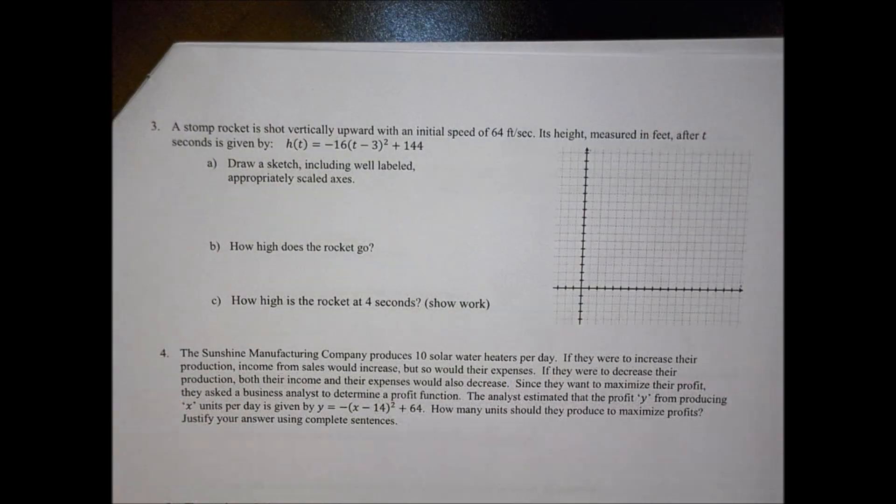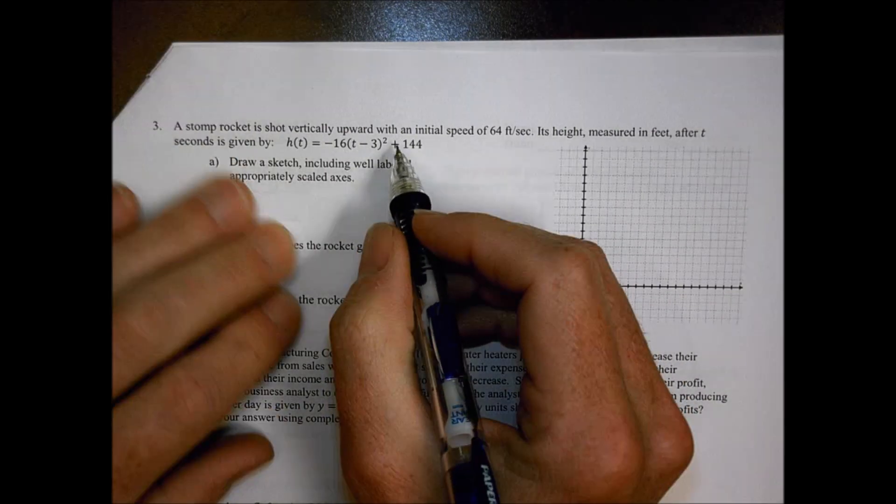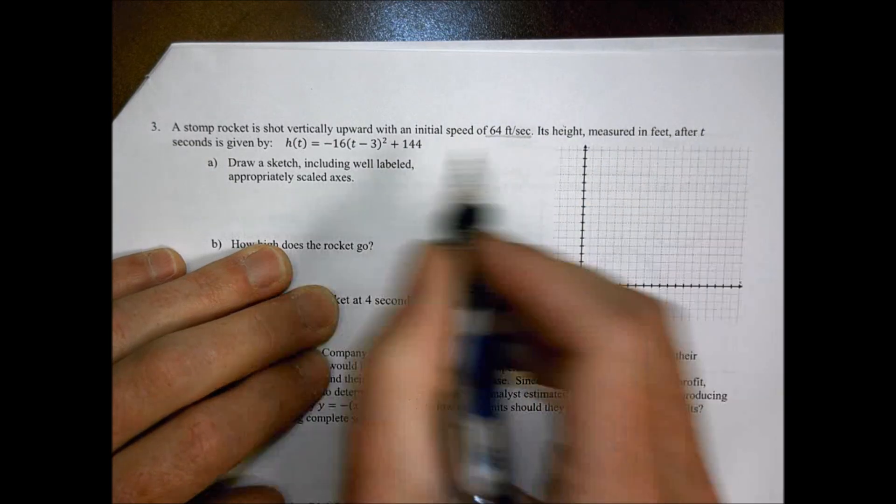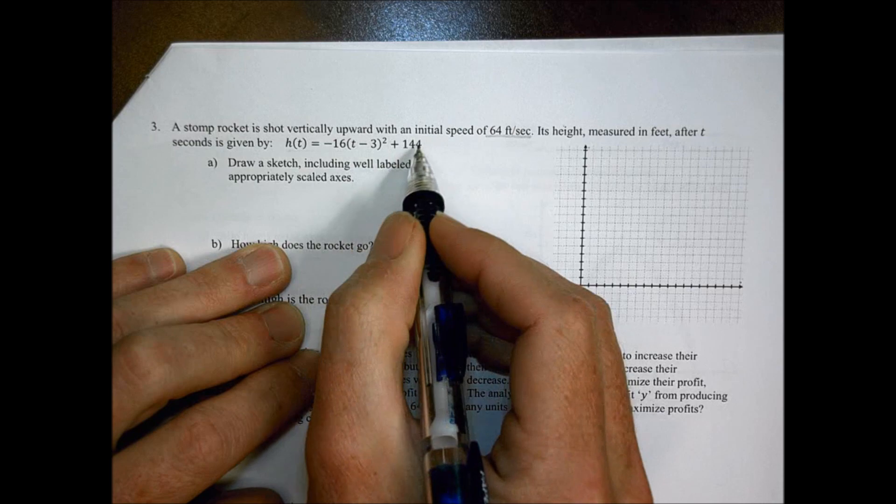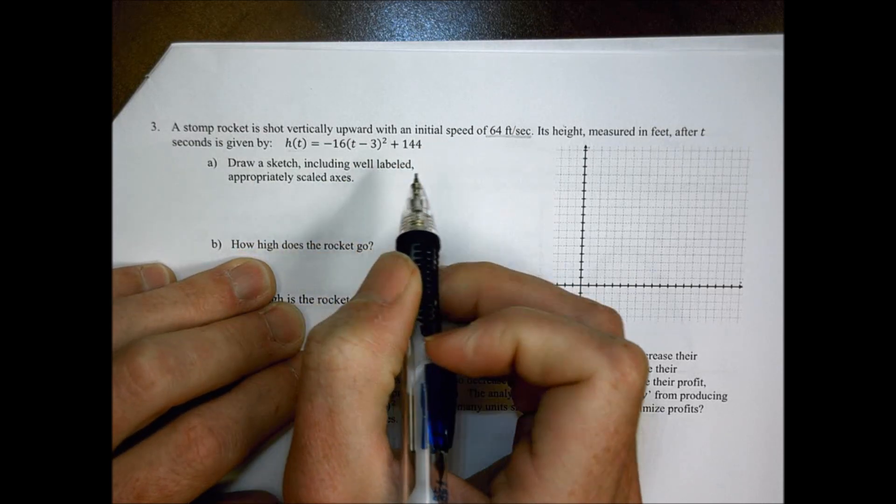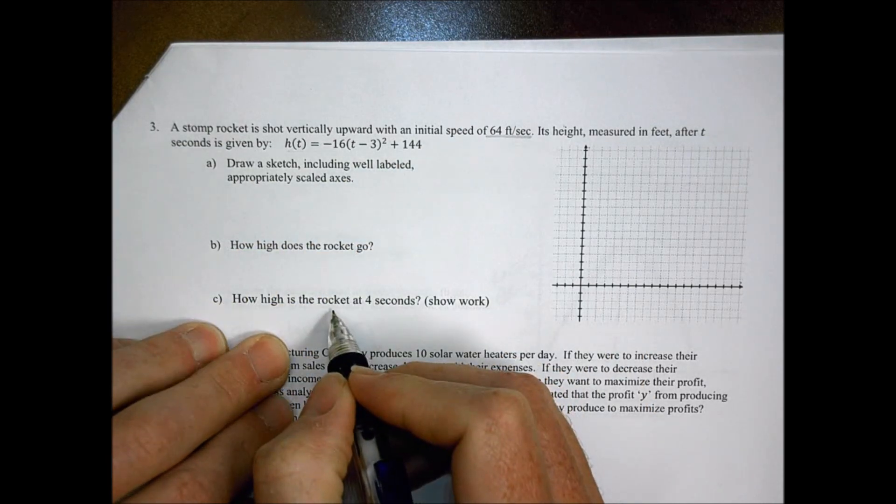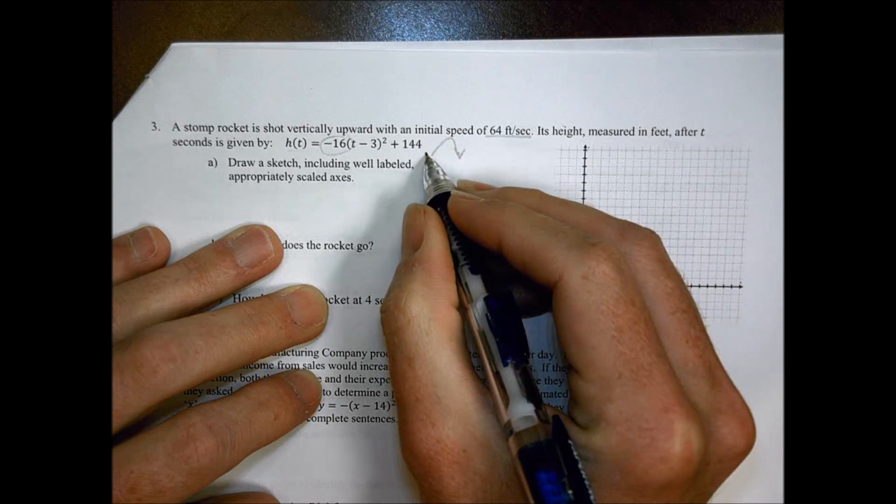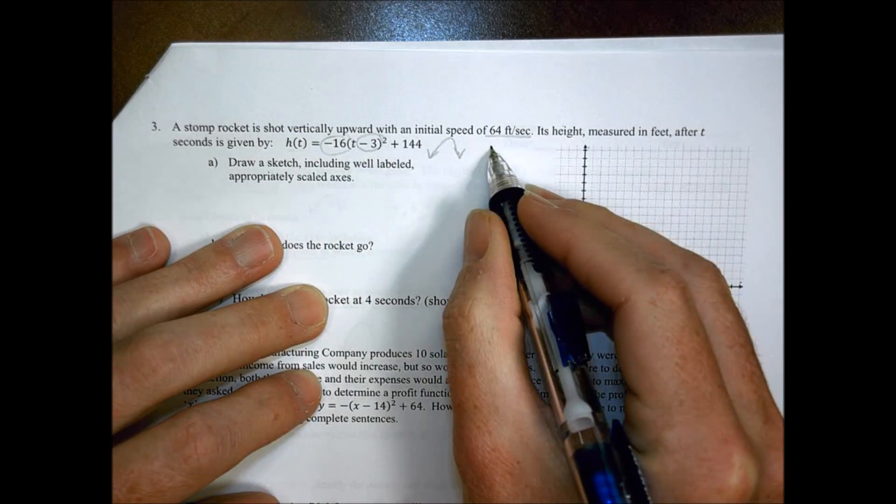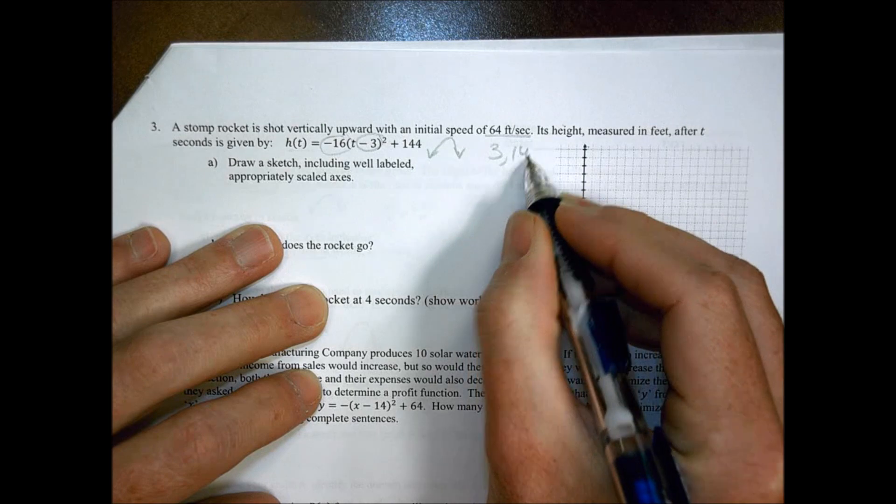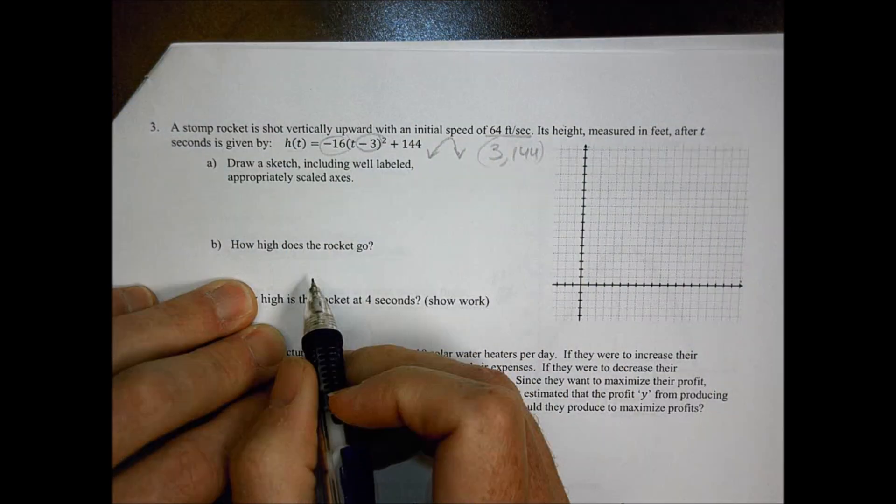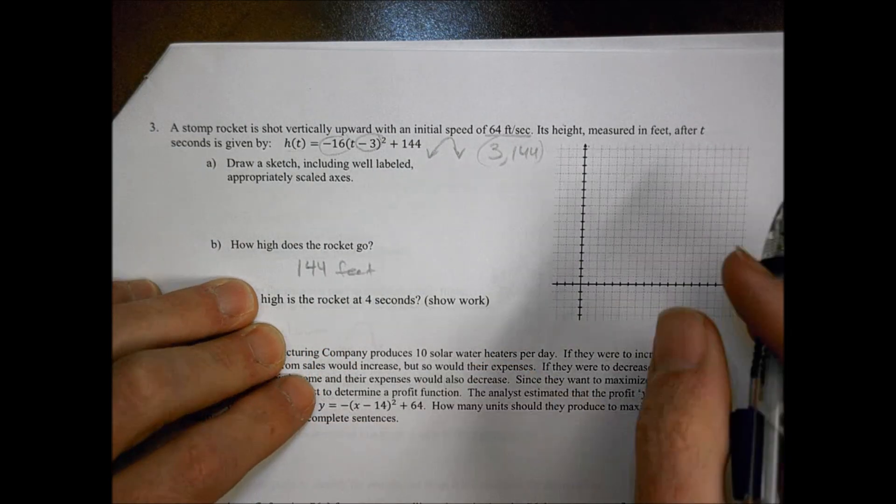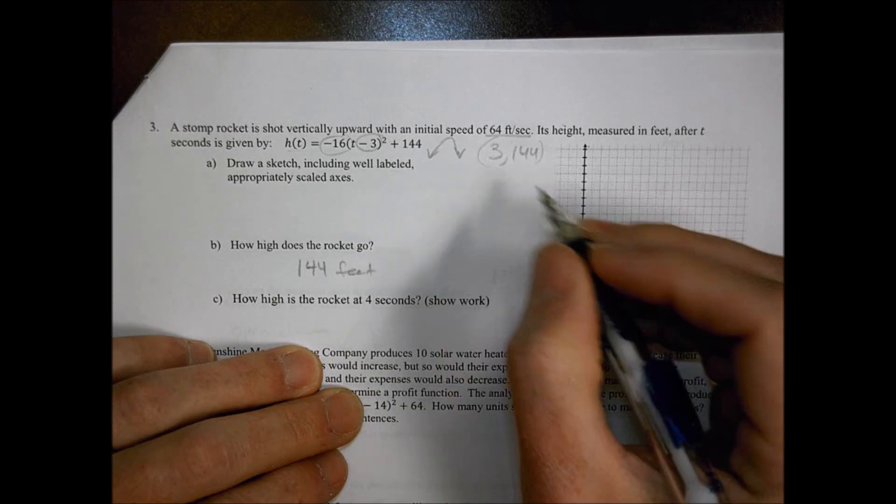Number three: A stomp rocket is shot vertically upward at an initial speed of 64 feet per second. Its height measured in feet after t seconds is given here. Draw a sketch with well-labeled appropriately scaled axes. We have a negative 16, so we know we're going to be curving like that. We have a vertex at 3 comma 144. So how high up does it go? That's going to be our maximum. We know it's going to be 144 feet is the highest that it's going to go.